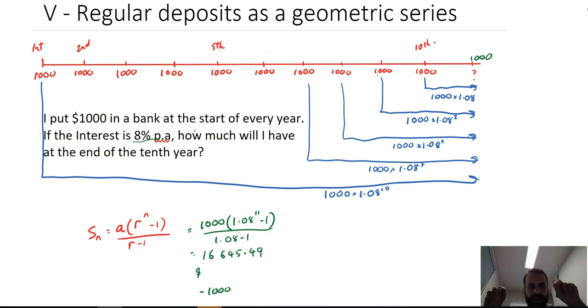So, draw the timeline, mark it all out, spend some time thinking about how it works, draw in your little arrows here to write it down. Then once you're confident you understand how the geometric series is progressing, then turn it into an actual geometric series.